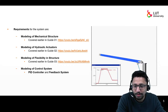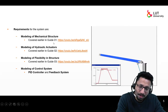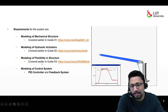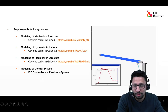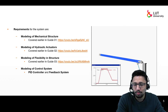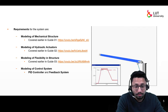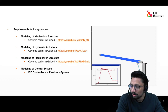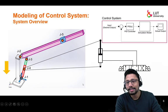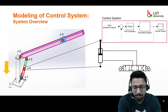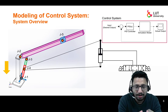I have covered the mechanical structure, hydraulic actuators, and flexibility in previous guided tutorials — please follow the links available in the description. This guided tutorial will be the last step for carrying out the simulation work. As a requirement for the control system, we need to have some feedback mechanism in our simulation model, and a PID controller can be a way to model that requirement.